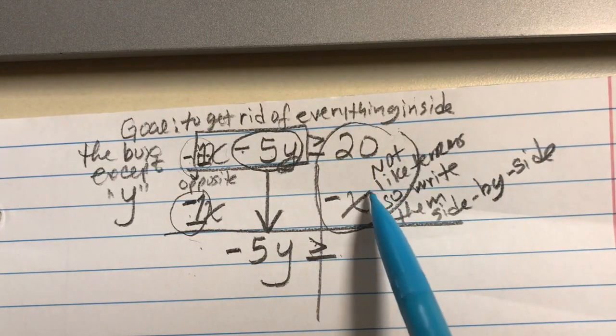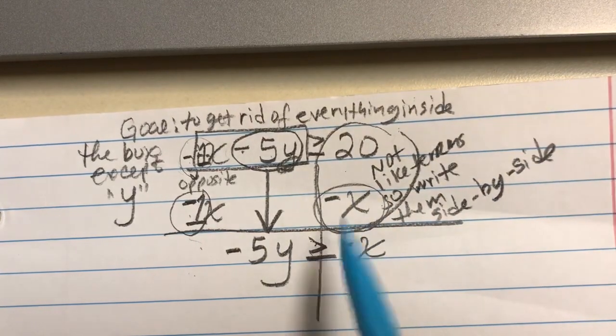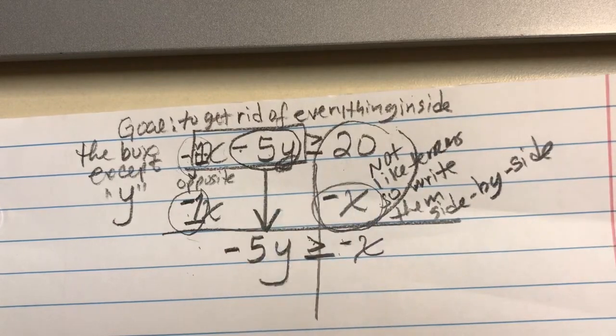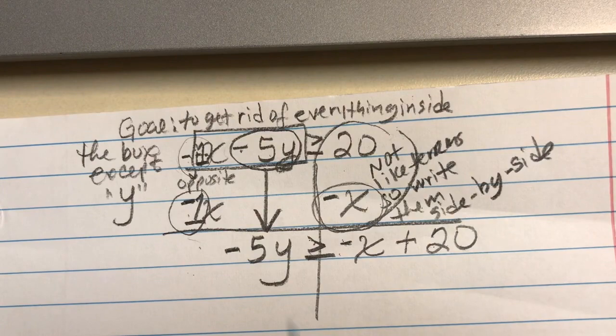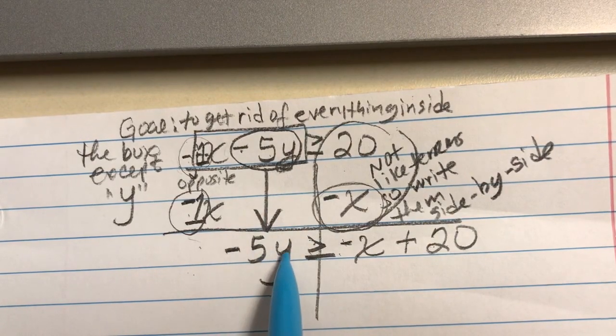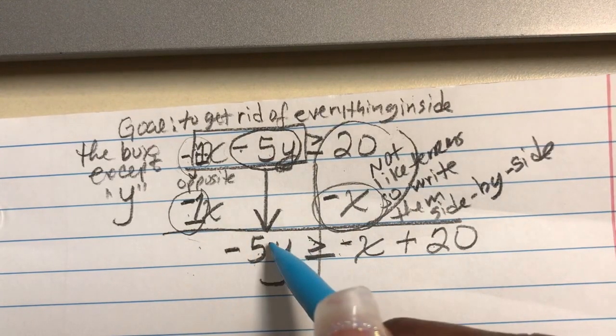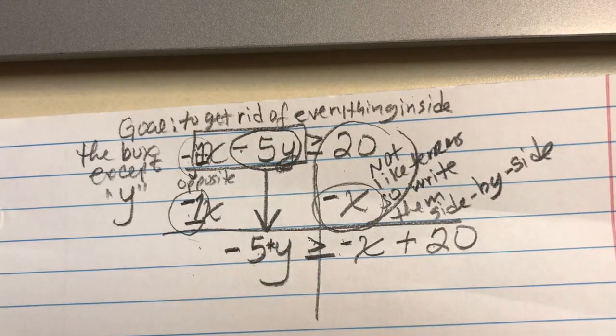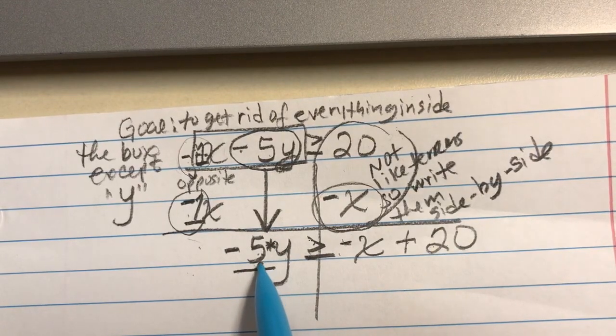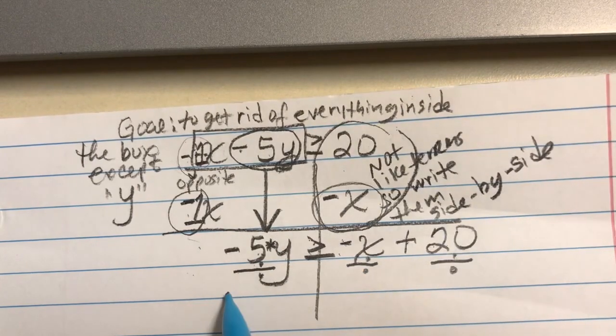Normally I would put the 20 first, but you know that the x value has to go first. So I'm going to put my negative and my x first. And this is a positive 20. We still have to get rid of everything except the y. Next to the y is a negative 5. In between the y and negative 5, there's an imaginary multiplication symbol. The opposite of multiply is to divide. So I'm going to divide everything that I see by negative 5.